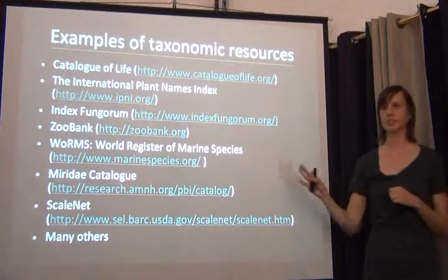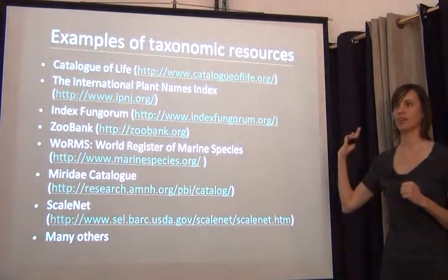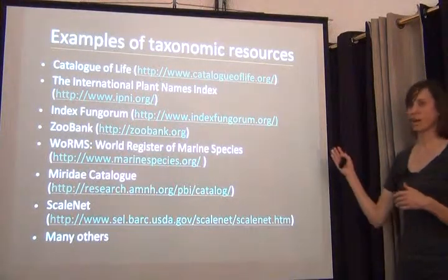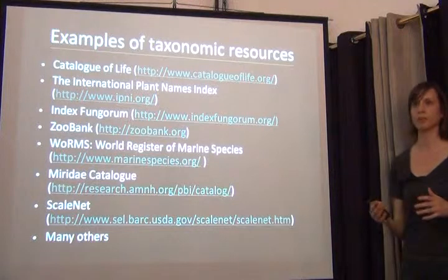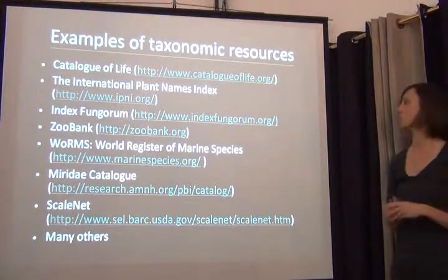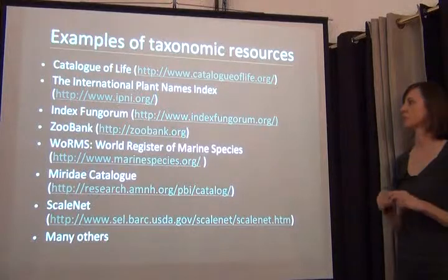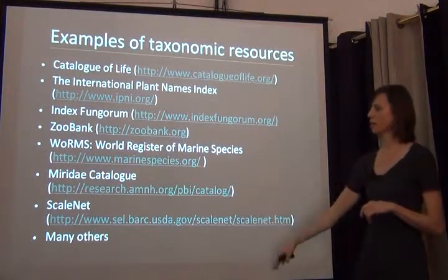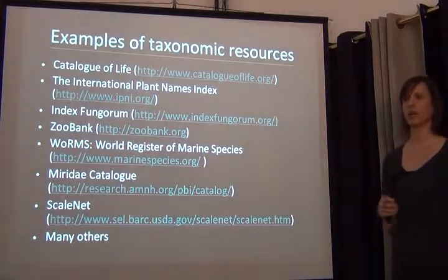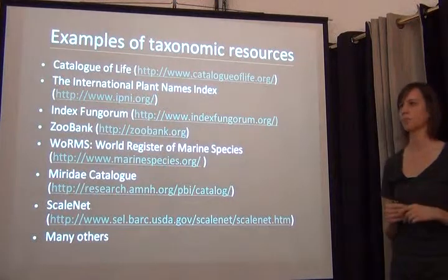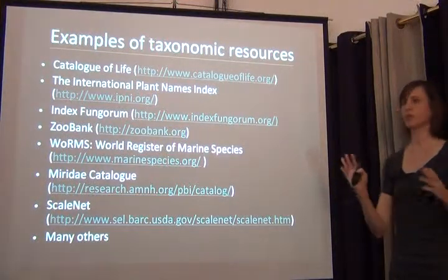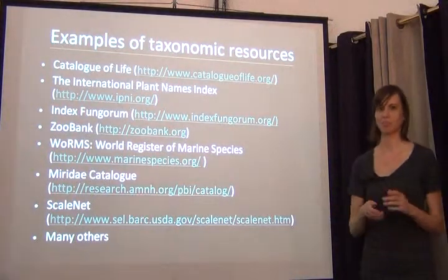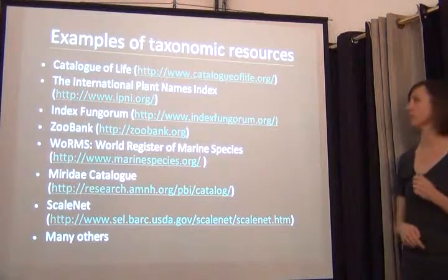There are many examples of taxonomic resources — this list doesn't even cover half of them, and it all depends on the group you're in. Catalog of Life is one of the main ones. The International Plant Names Index and the Plant List are main ones for plants. For Fungi, Index Fungorum; there's Zoobank, World Register of Marine Species, Miridae, ScaleNet — the list goes on. Whatever group you're working on, there's probably a list out there, and if there's not, get together with your colleagues and put one together.